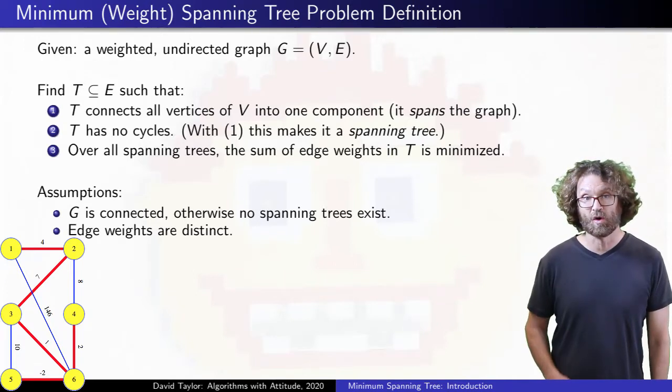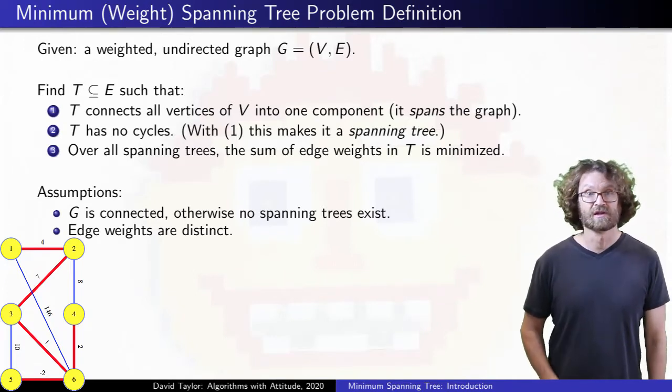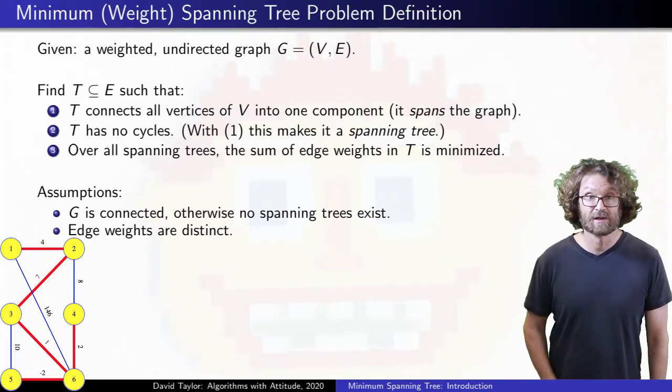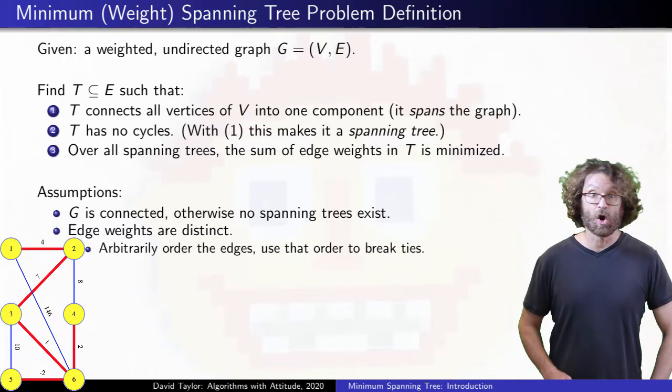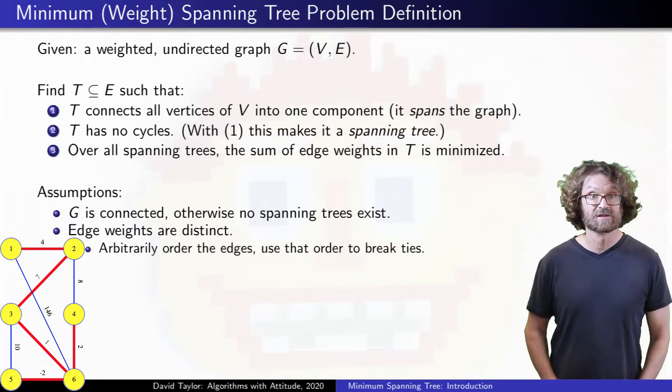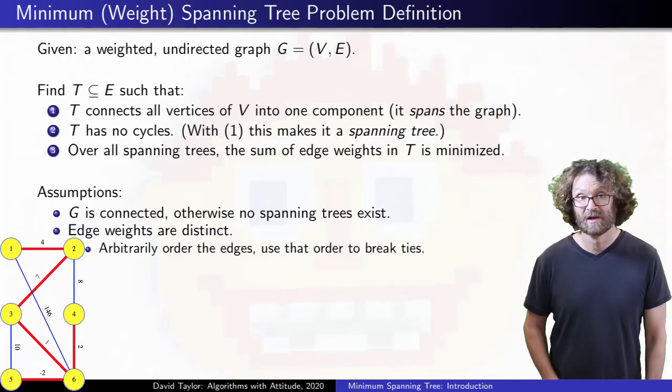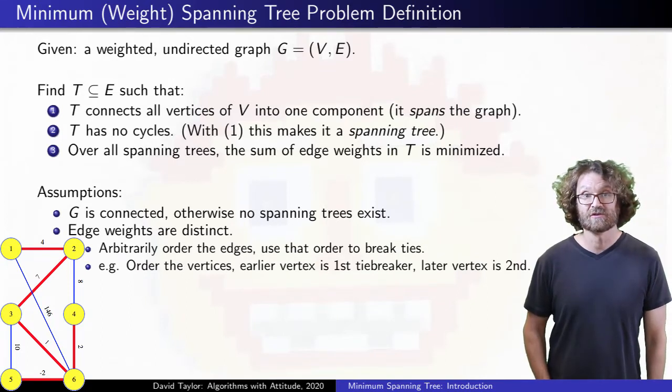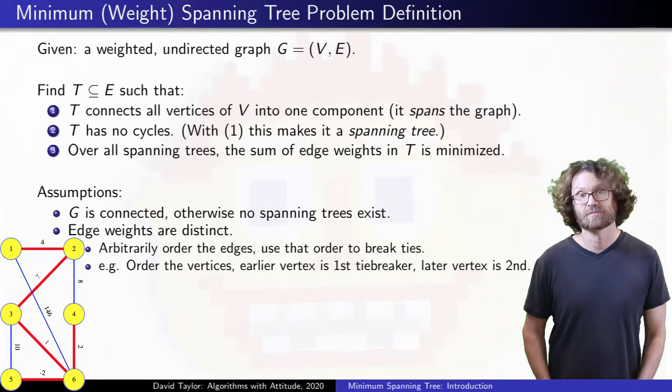That's why texts like Cormen talk about safe edges instead of minimum spanning tree edges. If everybody can agree on any arbitrary but consistent way to break ties for edge weights, even if that is just the order that your algorithm happens to see the edges, the proofs here still apply.